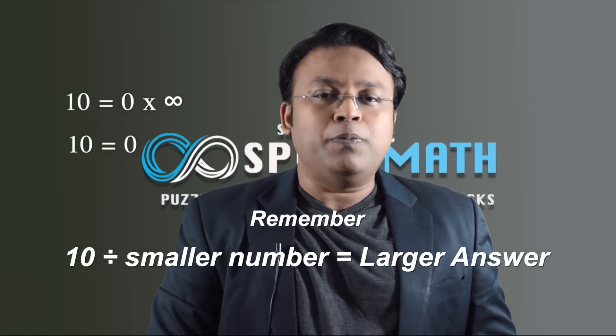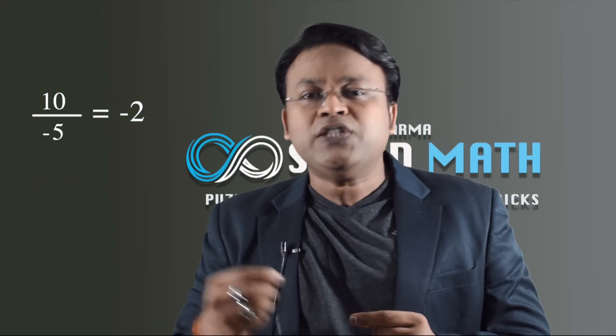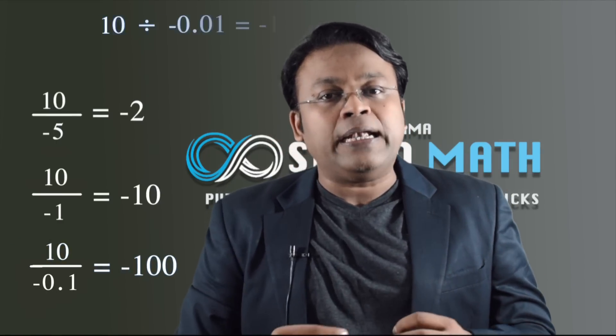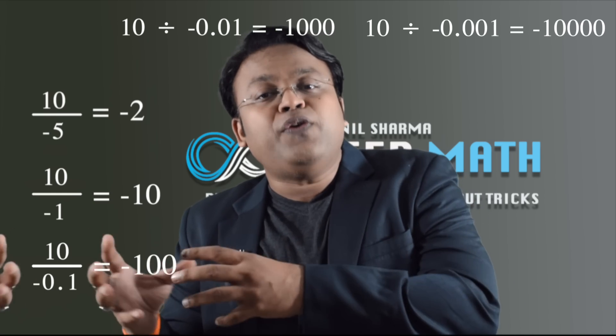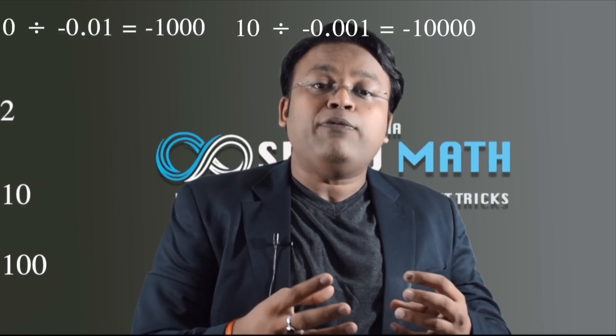Here's another problem. Remember how the smaller the number you divide by, the larger the answer you get? Well, what if instead of dividing 10 by 5 you divided 10 by minus 5? You would get minus 2. Dividing 10 by minus 1 gets you minus 10. That means dividing by negative numbers that tend towards 0 gets you numbers tending towards negative infinity. So if you wanted to say 10 divided by 0 was positive infinity — which we've already shown you can't — you would also have to say it was negative infinity.